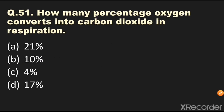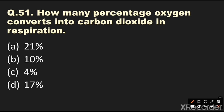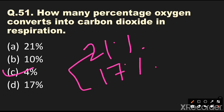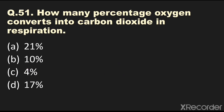Question number 51: How many percentage of oxygen converts into carbon dioxide in respiration? Options are 21%, 10%, 4%, or 17%. The answer is 4%. As we inhale, we take in 21% oxygen, and as we exhale, 17% oxygen — there is only 4% conversion to carbon dioxide during respiration.